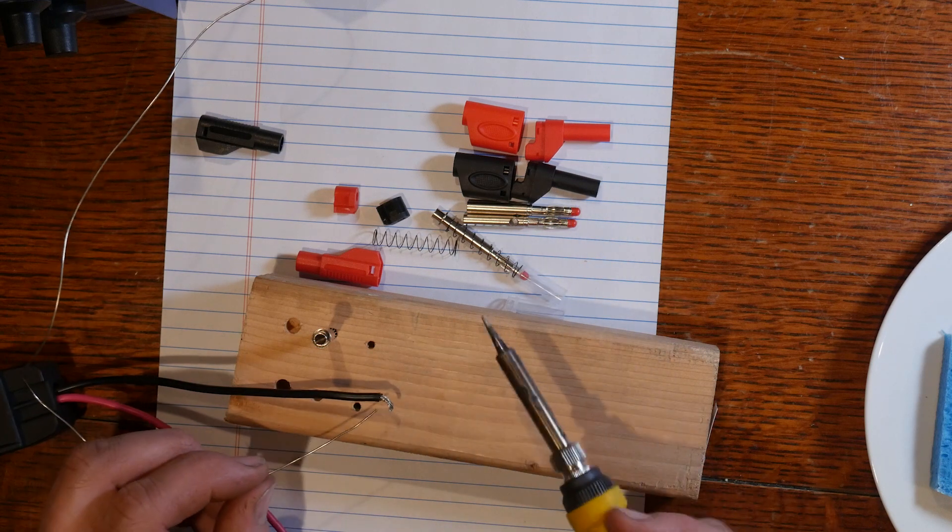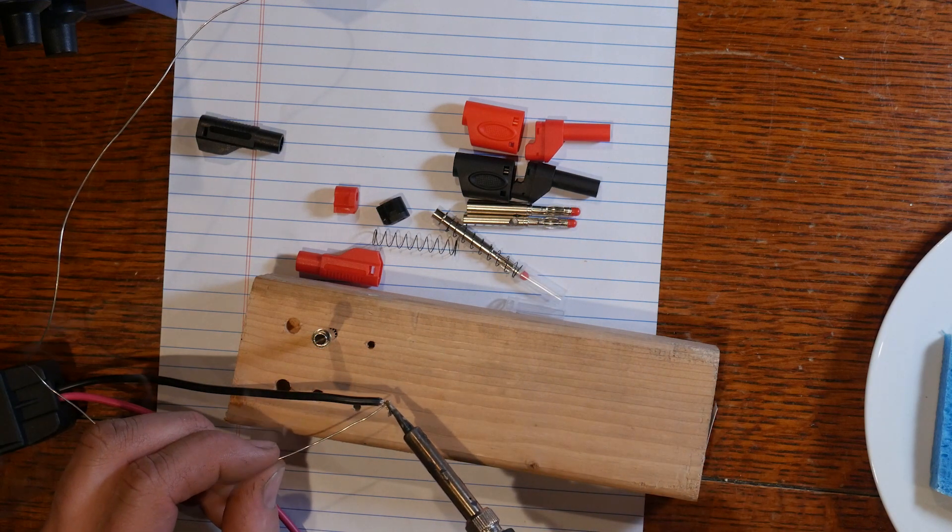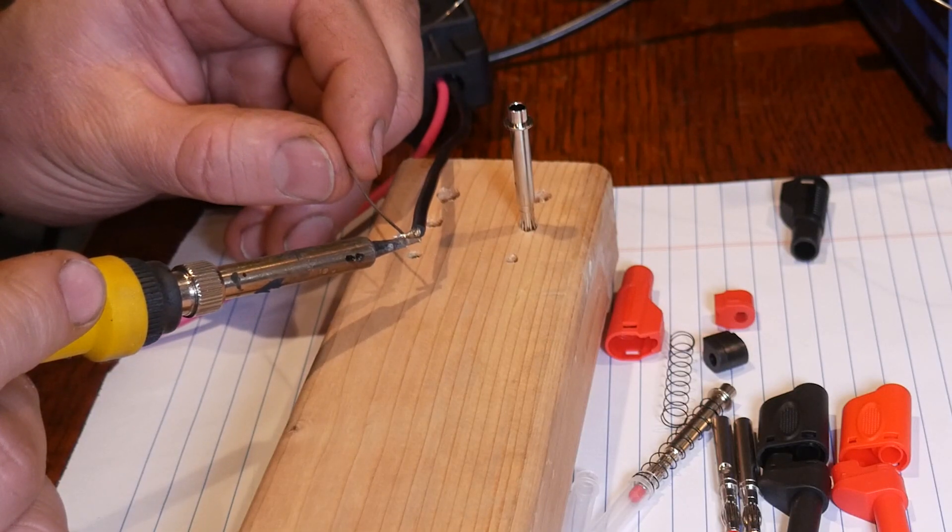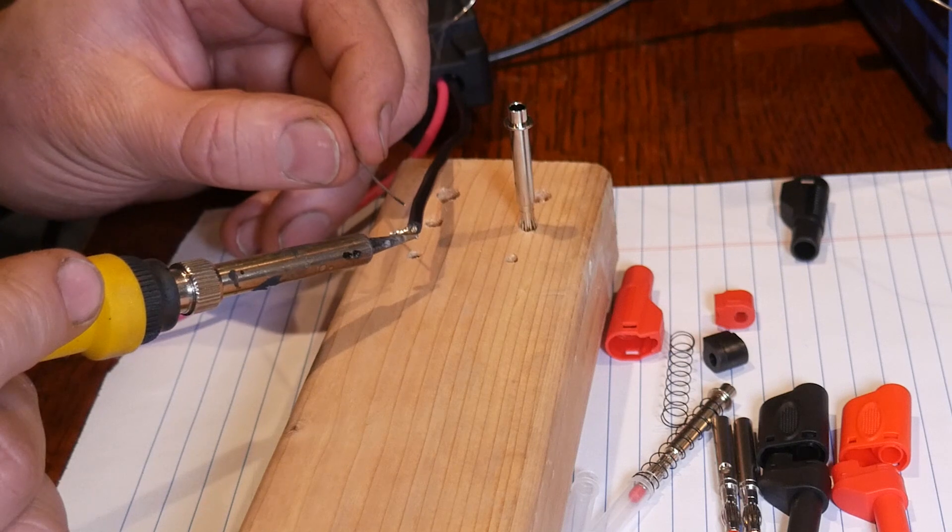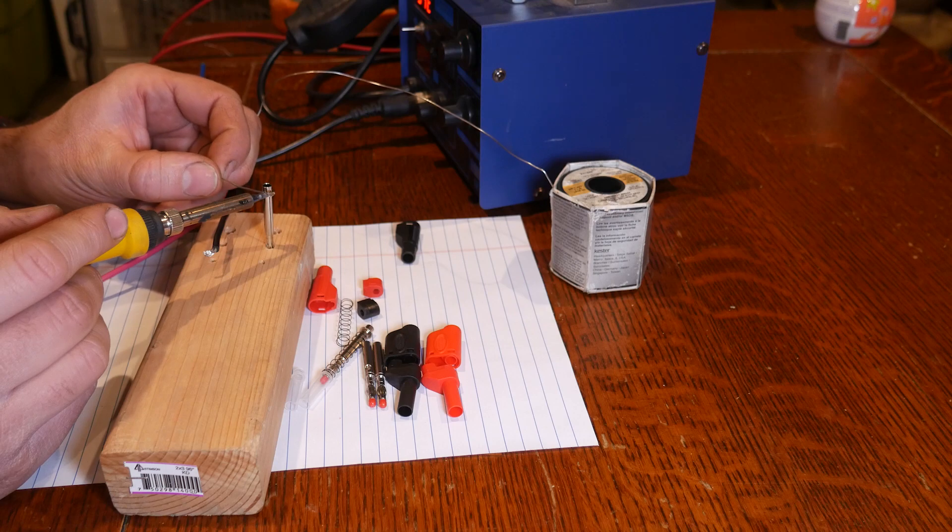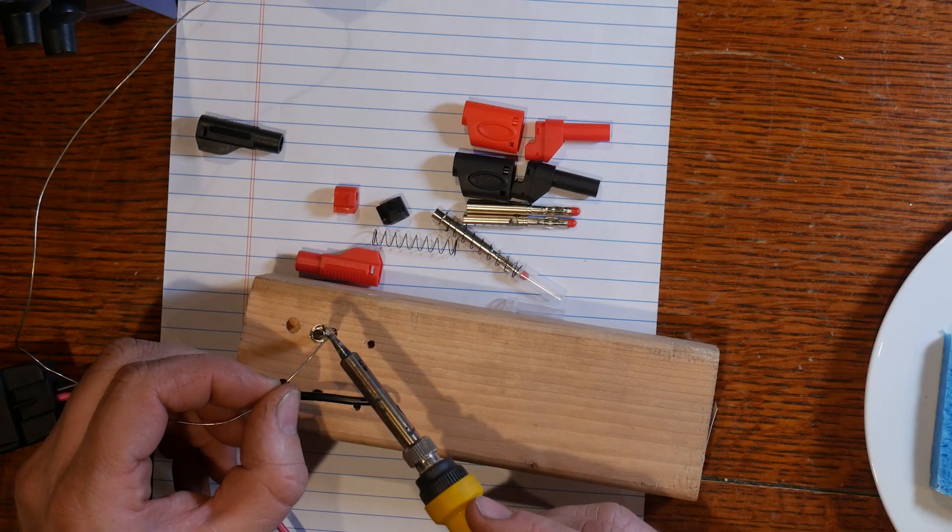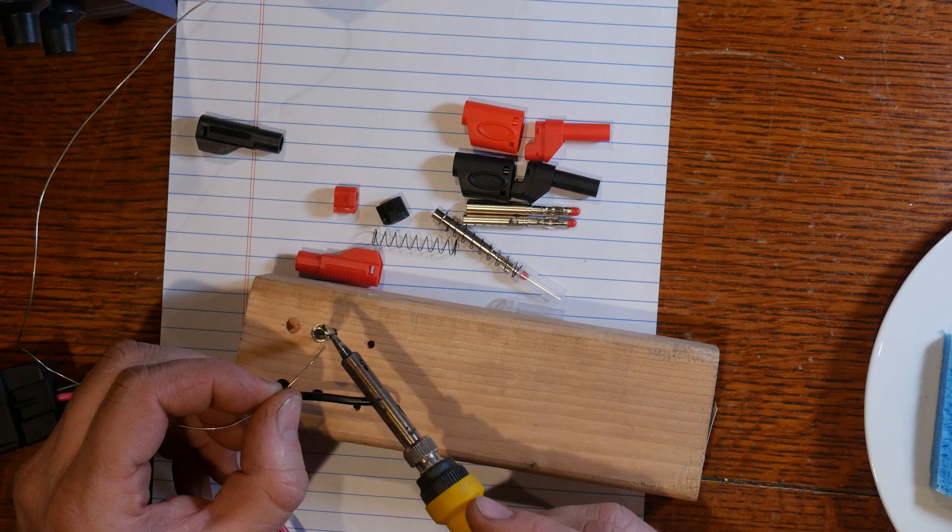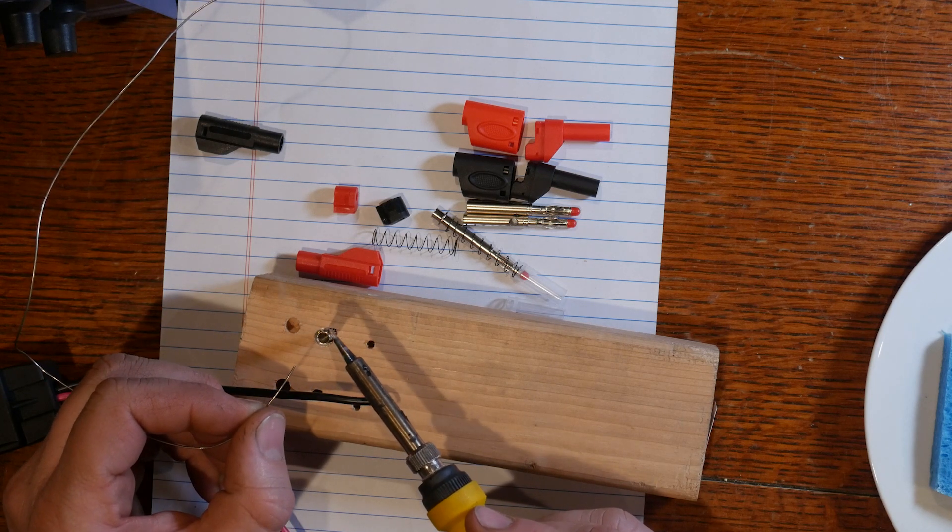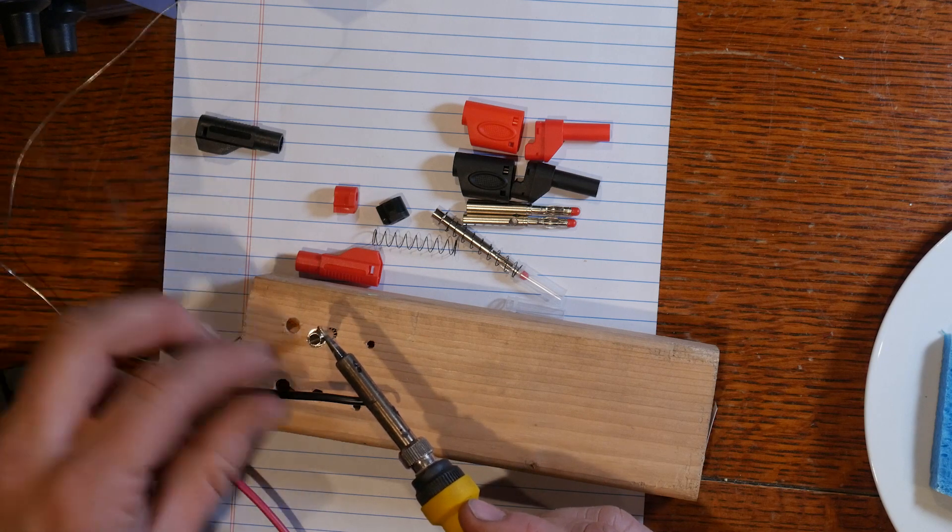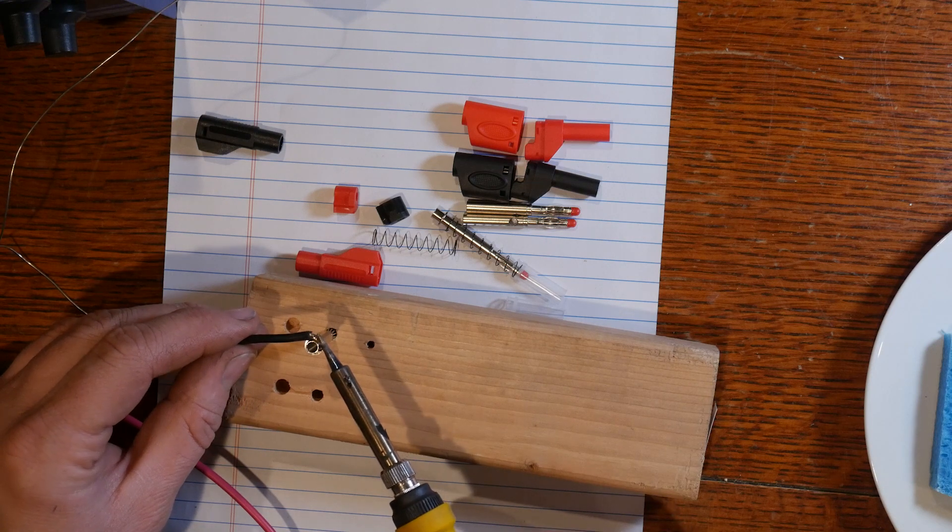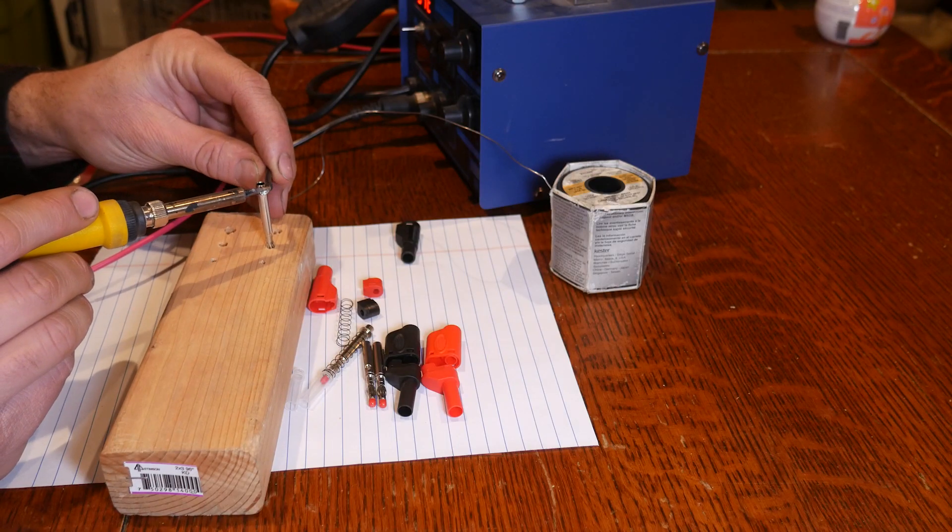We may pre-tin the terminal as well. Now one nice thing if you're using the alligator clips is that does dissipate the heat a little bit, so we could protect the little plastic ball on the other end of this. But I believe the wood will do the same thing. It'll act like a big heat sink. So we got solder on there.